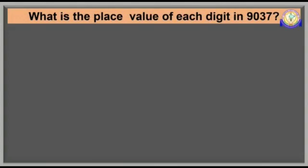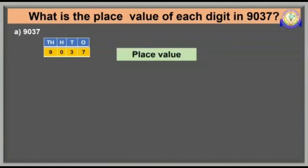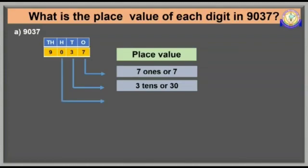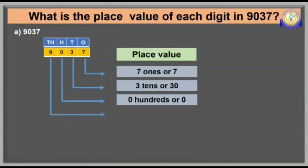Let's try with a few more examples. Here you need to write the place value of each digit. See the first example — the number is 9037. The digit 7 is in the 1's place; therefore, the place value of 7 is 7 × 1 = 7. The digit 3 is in the 10's place; therefore, the place value of 3 is 3 × 10 = 30. The digit 0 is in the 100's place; therefore, the place value of 0 is 0 × 100 = 0. The digit 9 is in the 1000's place; therefore, the place value of 9 is 9 × 1000 = 9000.